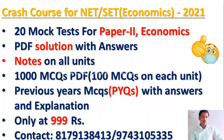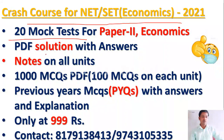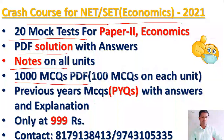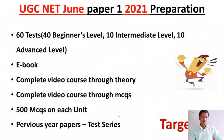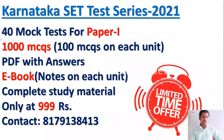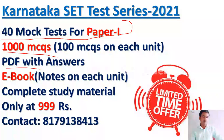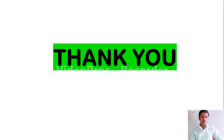This concludes today's session. In our crash course for NET SET Economics 2021, we are providing 20 mock tests for Paper 2 economics. You will get the solution PDF of all 20 tests, notes, and 1000 MCQs PDF, and previous years' questions will also be solved. For UGC NET Paper 1 preparation, we are also providing 60 tests. For Karnataka SET Paper 1, we are providing 40 tests, 1000 MCQs PDF, PDF of all 40 tests, and an ebook. If you subscribe for Paper 1 and Paper 2 at the same time, you will get up to 50% discount. Thank you very much, and I wish all the best to all NET and SET aspirants in economics. Thank you.